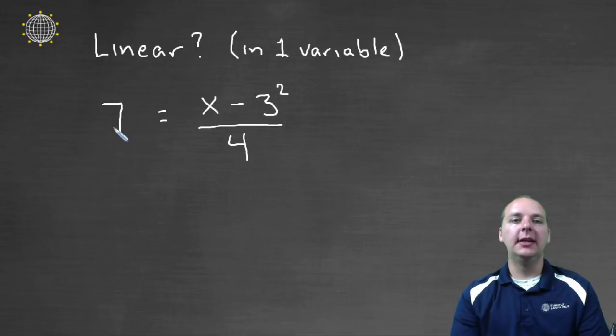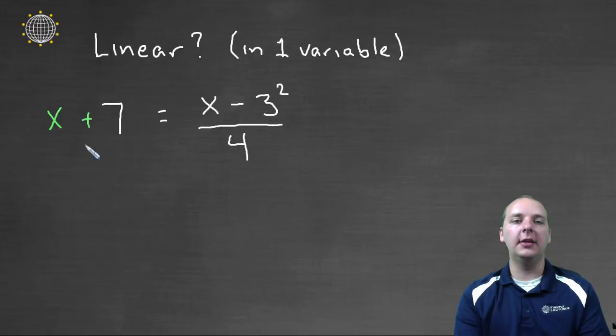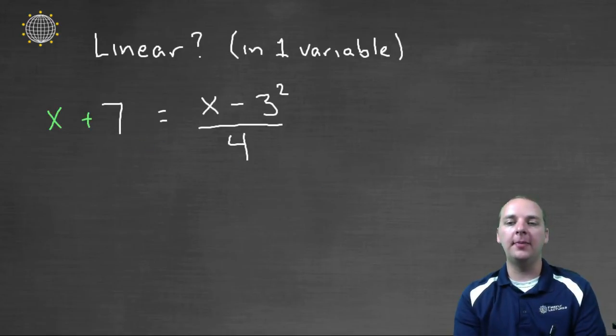How about this one? Seven equals x minus three squared divided by four. One variable, that's good, I only have x's. And again, let me reiterate something I said earlier. Even if you had an x on the left hand side, even that would be okay. You can even have an x on the left hand side. You just can't have an x and a y or a z or some other variable. So that's fine, but it's certainly fine the way that it is.